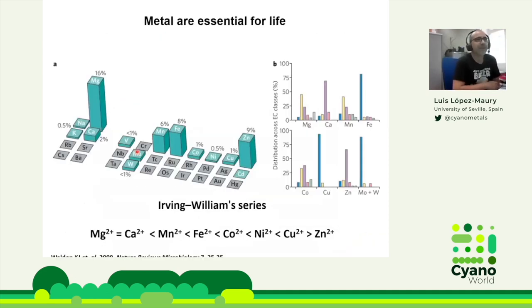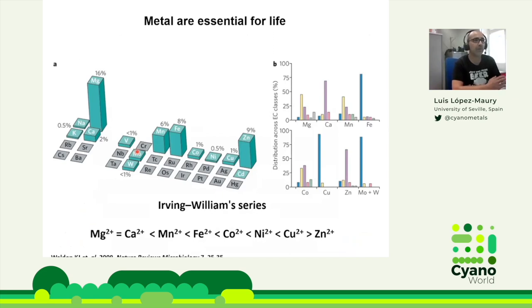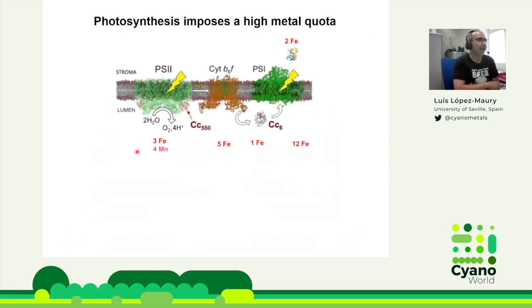Metals are essential for all organisms because they are part of many proteins that are needed for either functioning or folding. That's especially true for enzymes, where around half of all enzymes need a metal to work properly. Photosynthesis is a high metal-demanding process, especially because the photosynthetic machinery is iron and manganese rich.